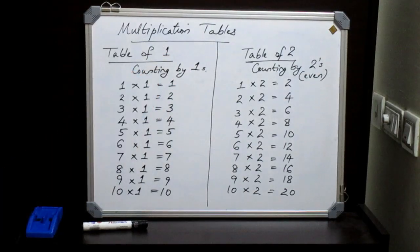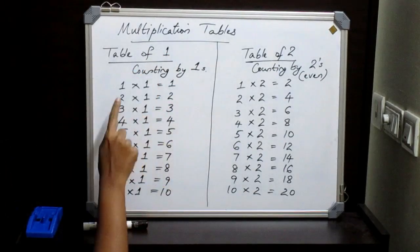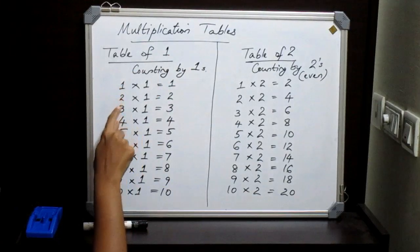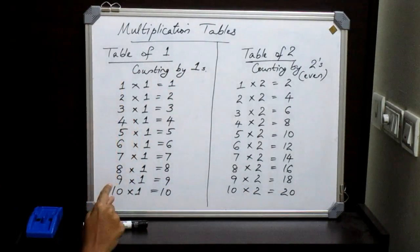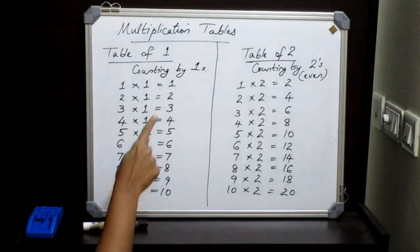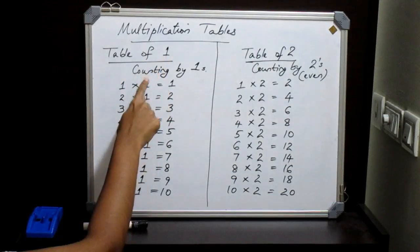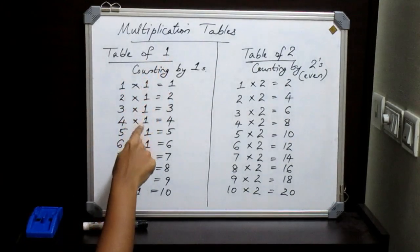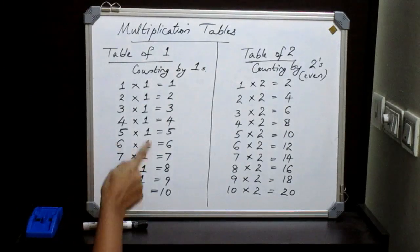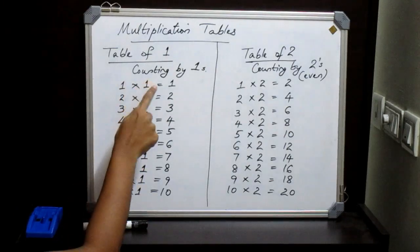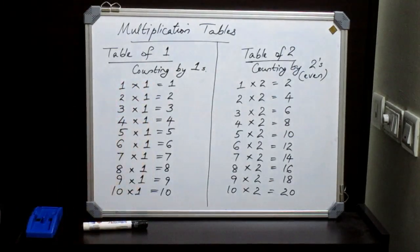So how will you write the table of 1? We will write 1, 2, 3, 4 up to 10 on the leftmost side, and whose multiplication table we need is written on the second part, such that: 1 into 1, 2 into 1, 3 into 1, 4 into 1, likewise.